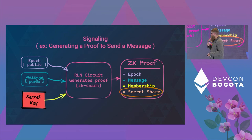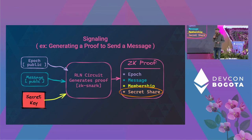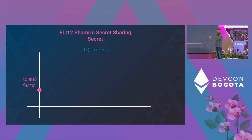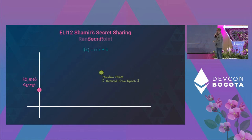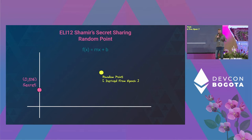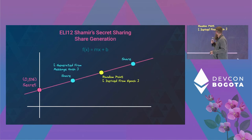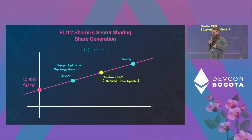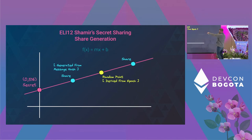This secret share is one of the most important parts of how RLN works. Basically, if you have a secret, you can plot that on a graph — this is basically how Shamir's secret sharing works. You have a random point needed to construct your shares, and that is derived from the epoch. The shares are generated from the message hash. The whole idea is: you have a secret, you break it up into parts, distribute those parts publicly, and if you have enough of them, you can reconstruct the secret. With two shares, you can reconstruct where that line is.